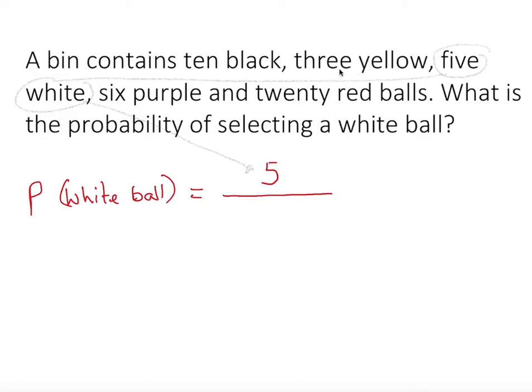10, 3, we just add all of them on the bottom. So 10 plus 3 plus 5 plus 6 plus 20, that all goes to the bottom. Or plainly, we can say 5 out of 44.